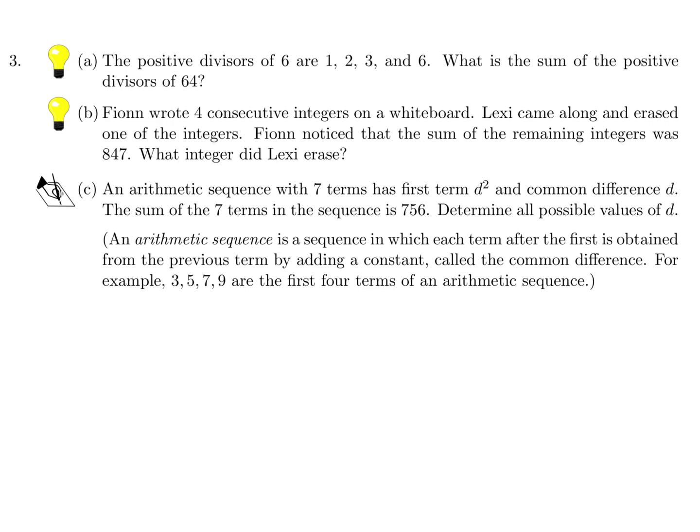The positive divisors of 6 are 1, 2, 3, and 6. What is the sum of the positive divisors of 64? First let's list the positive divisors of 64. I believe it's 1, 2, 4, 8, 16, 32, and 64. Then the sum, of course, add these guys all up. But when you do, you should get 127.